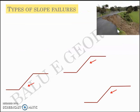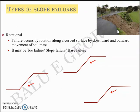The types of slope failures. Number one is rotational. Rotational failure occurs by rotation along a curved surface by downward and outward movement of soil mass. And rotation failure itself can be toe failure, slip failure, or base failure depending on where the failure surface passes through with respect to the geometry of the slope.